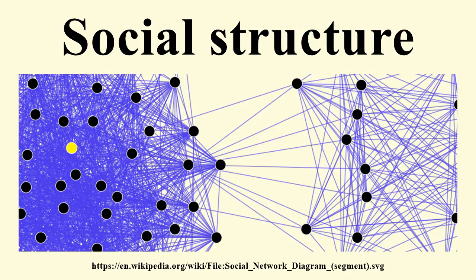Social structure may be seen to influence important social systems including the economic system, legal system, political system, cultural system, and others. Family, religion, law, economy, and class are all social structures. The social system is the parent system of those various systems that are embedded in it.